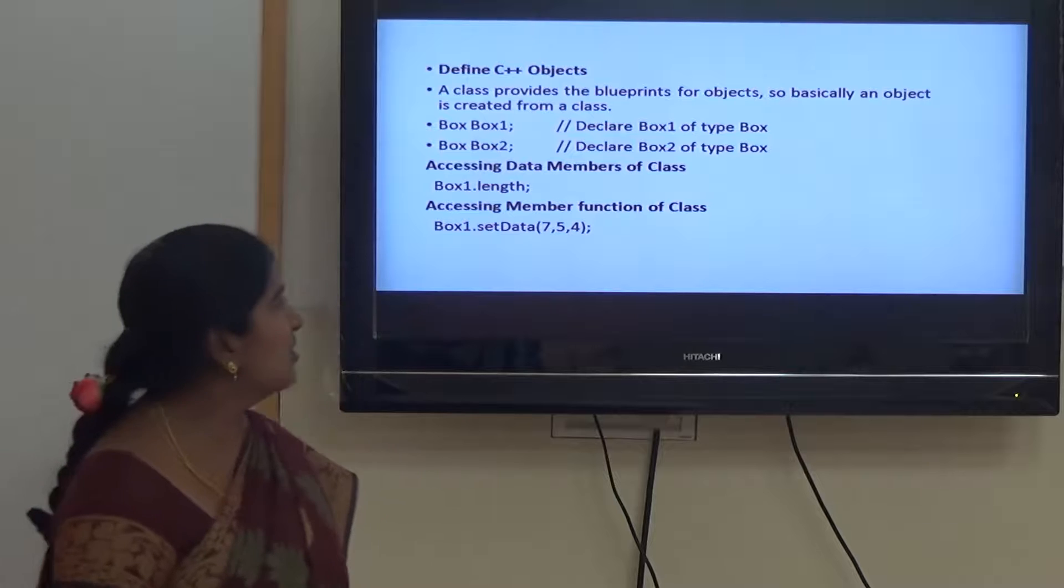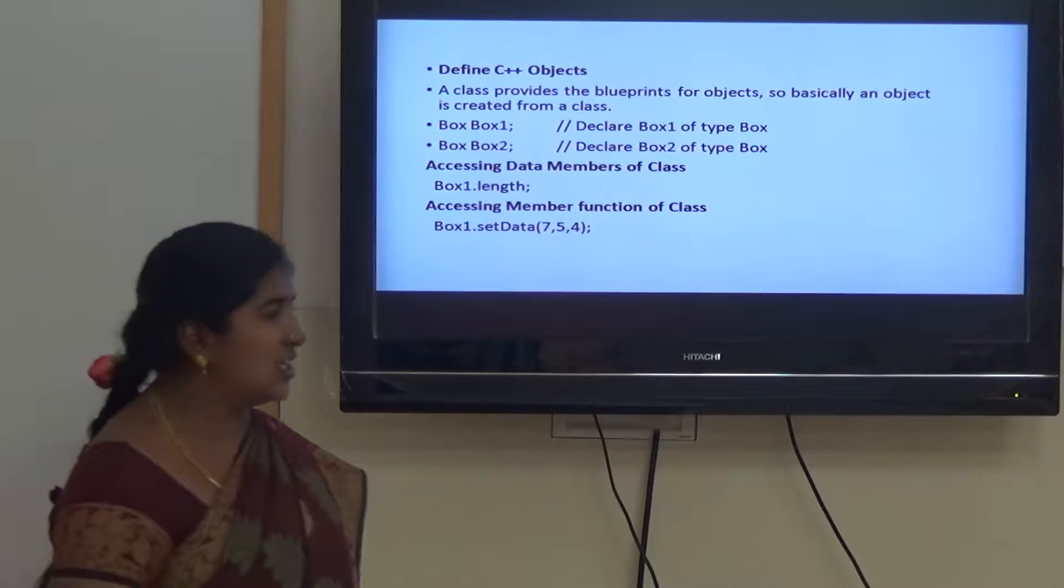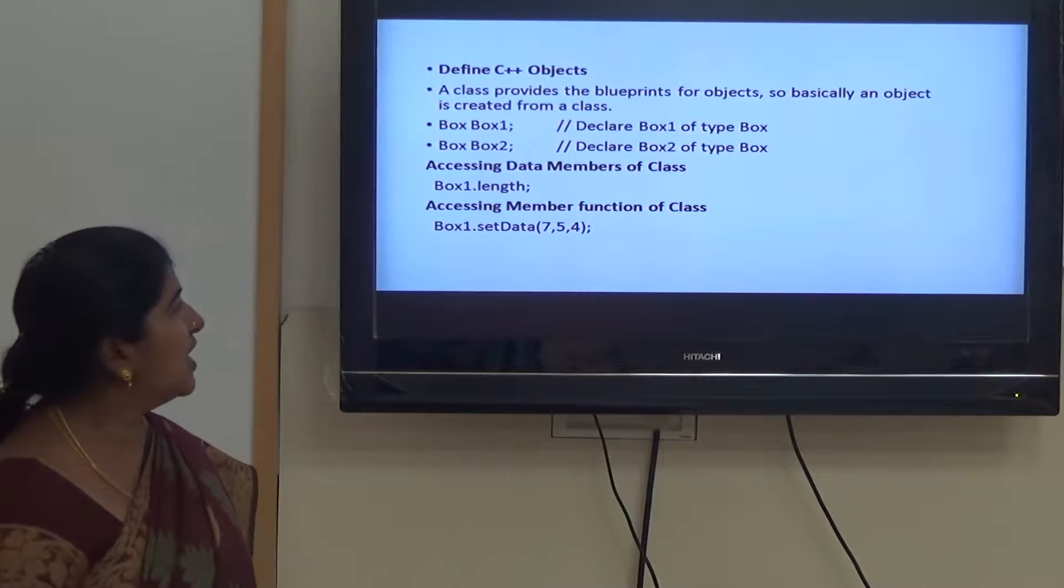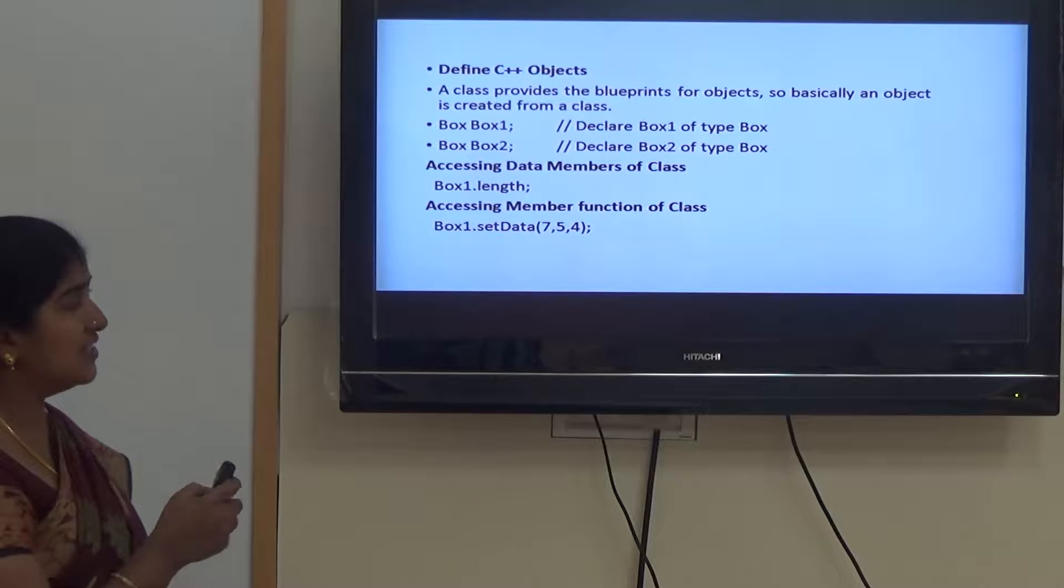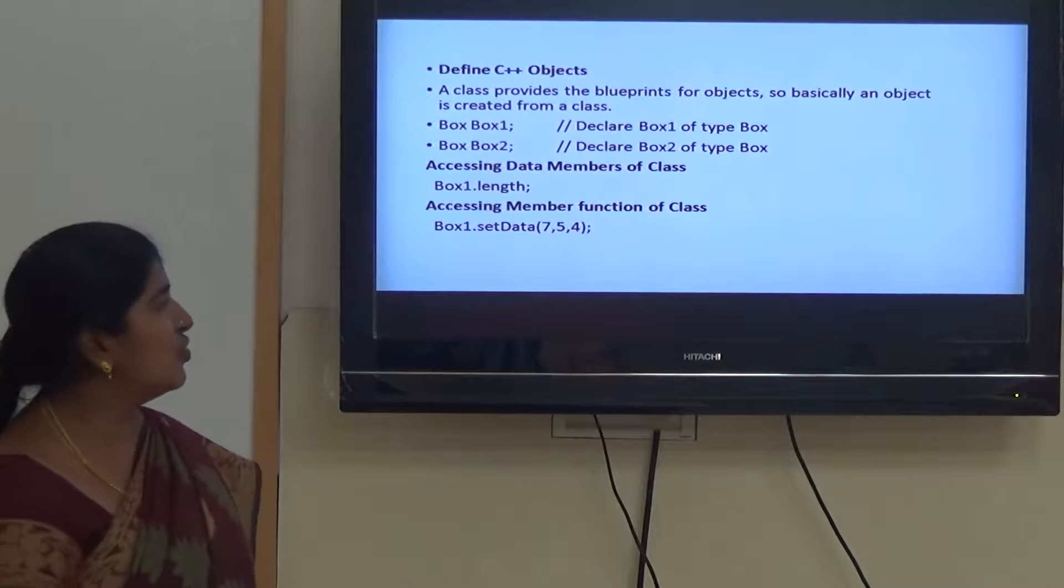After defining a member function, next we create an object. At the time of creating an object, memory is allocated for the data of an object where we can store the data of objects. Here box is a class, it is a data type. For that we can create a variable. Box one is an object.